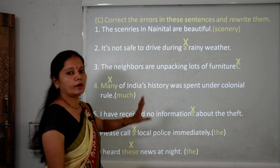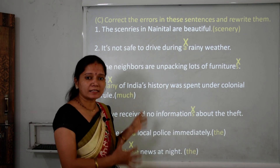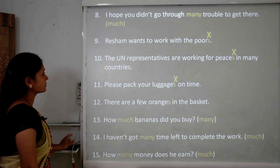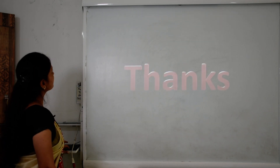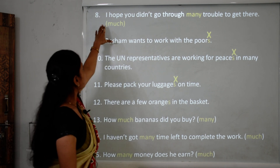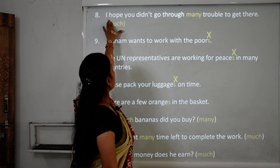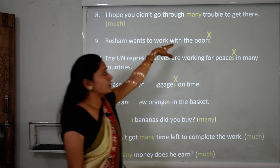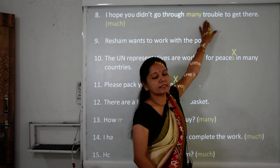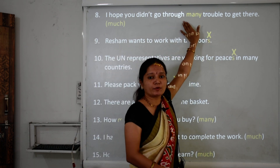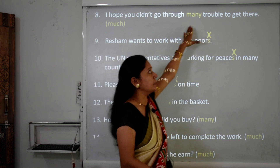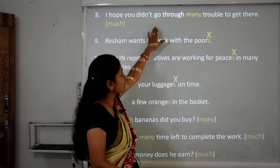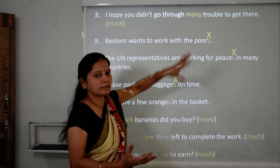Please practice this exercise at home. Sentence 8: 'I hope you didn't go through many trouble to get there.' Trouble is uncountable, so we use 'much.' The correct sentence is: 'I hope you didn't go through much trouble to get there.'